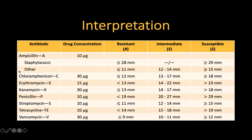In our example, chloramphenicol has an inhibition zone of 28 millimeters, which is greater than 18 millimeters. These bacteria are therefore susceptible to chloramphenicol.